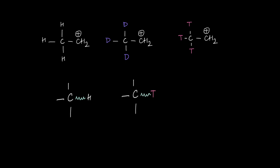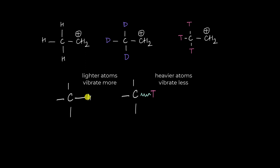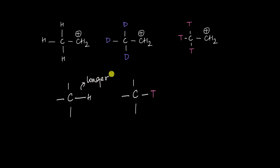In a carbon-tritium bond, because tritium is heavier than hydrogen, it turns out that it doesn't vibrate as much as a carbon-hydrogen bond. So therefore, on average, a carbon-hydrogen bond is longer compared to a carbon-tritium bond. Because on average these bonds are longer, the electrons in this bond are further away from the nucleus of both the carbon and hydrogen atoms. So there will be a weaker electrostatic attraction between these electrons and the nucleus compared to the electrons in a carbon-tritium bond, where the electrons are much closer to the nucleus.